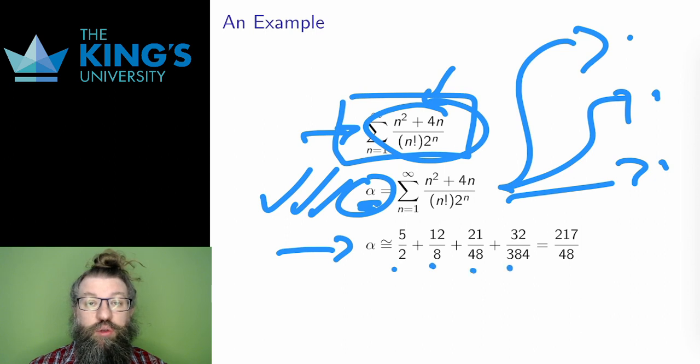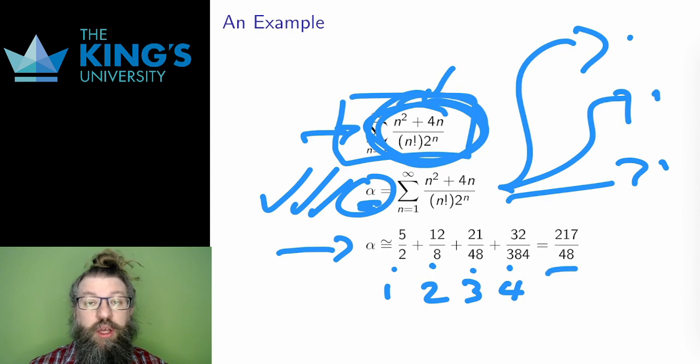That is, I take n equals 1, 2, 3, and 4, and put them into this expression. The results are these four fractions, which sum to 217 over 48. This is an approximation for the number alpha.